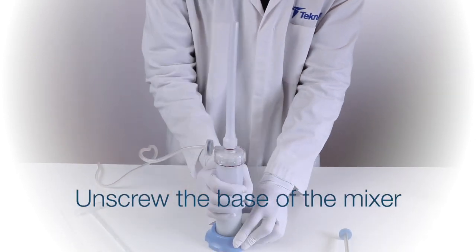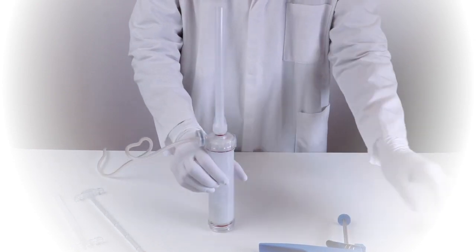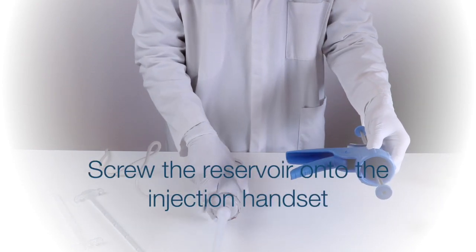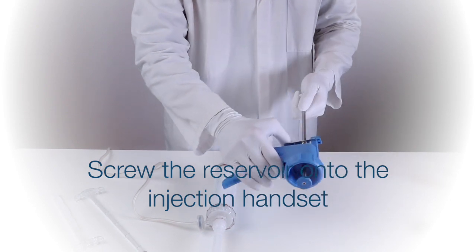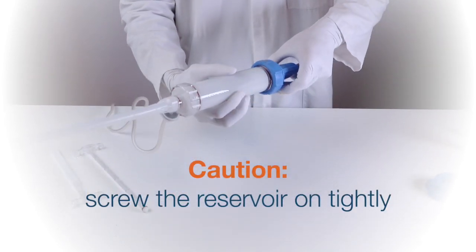Unscrew the base of the mixer. Screw the reservoir onto the injection handset. Caution: screw the reservoir on tightly.